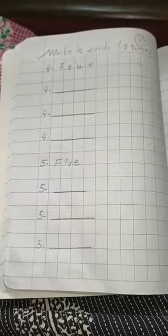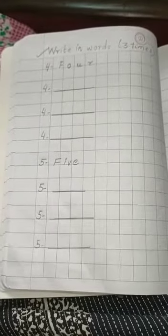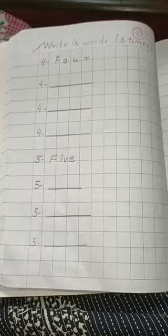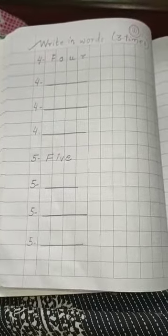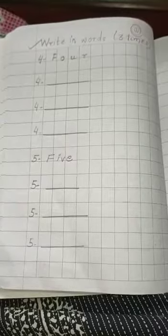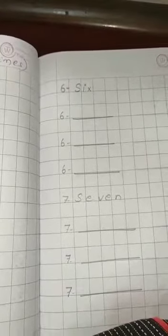Hello children, in the last video I showed you the spelling of 0, 1, 2, and 3. Today we are going to read and write the spelling of 4, 5, 6, and 7. So let's start.